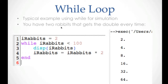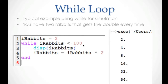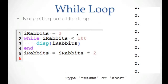Let's suppose that we have two rabbits and we want to get the double every time. We begin with a variable named irabbits. The condition will be that while irabbits is smaller than 100, we will display the value of irabbits, and we increase irabbits by multiplying it by two. It's very important that we assign irabbits on both sides of the equal sign. It will display 2, 4, 8, 16 ... until it is not smaller than 100, so 64 is the last value displayed.